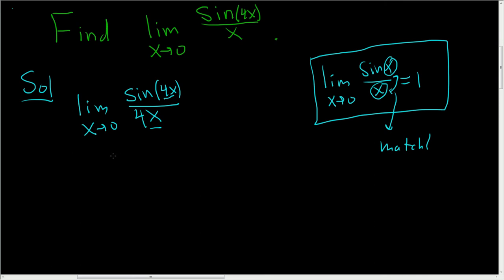You write down what you want, and then you fix it later. How do you fix this? Just put a 4 out here, because now the 4s cancel. You end up with 4 times, and this limit here we know is 1, so you just get 4, and that's the answer.